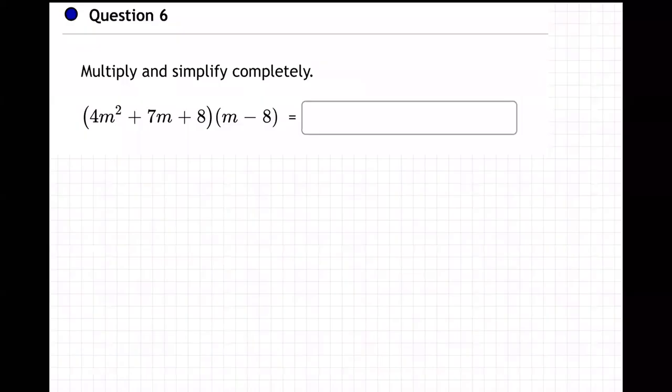Okay, so on this problem, they want us to multiply and simplify completely. So how do we do it? Basically, we're going to go one at a time.